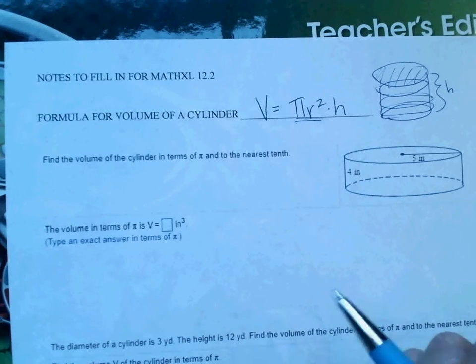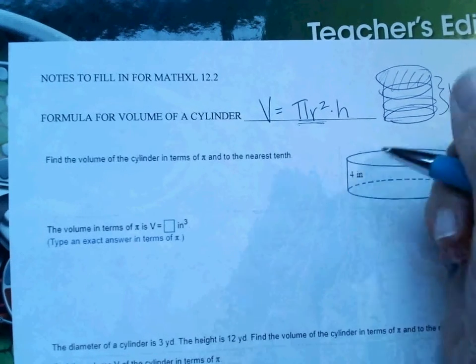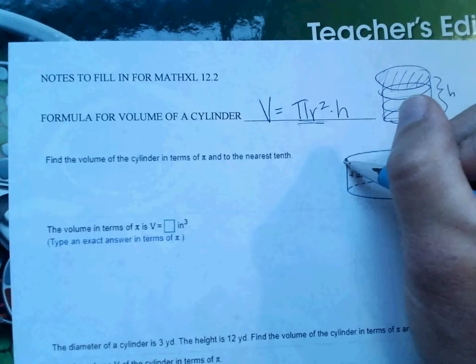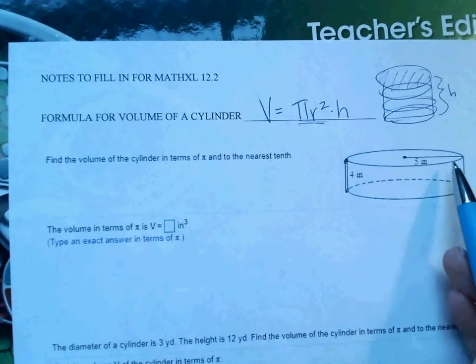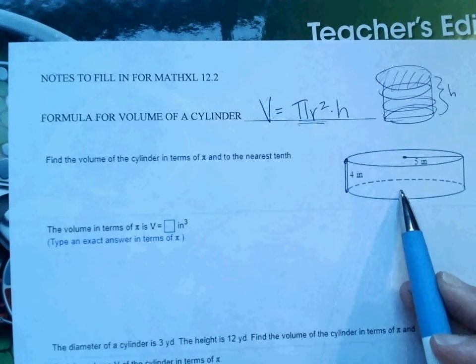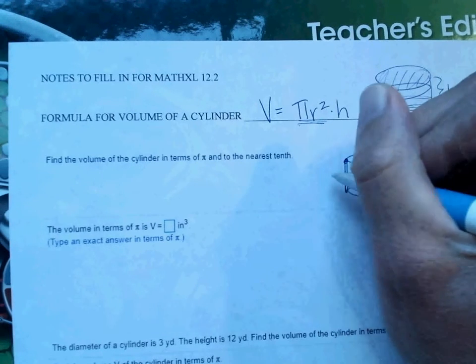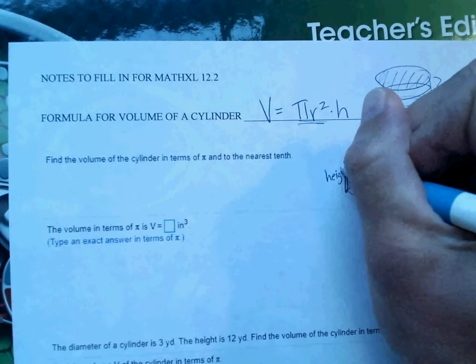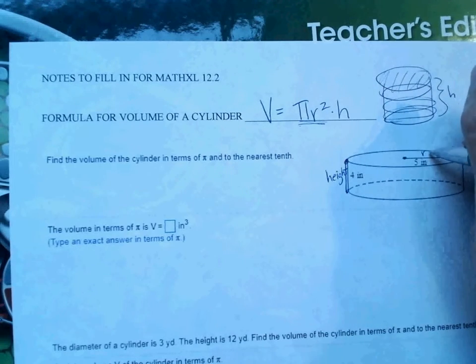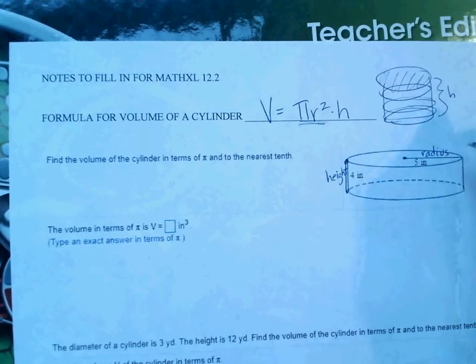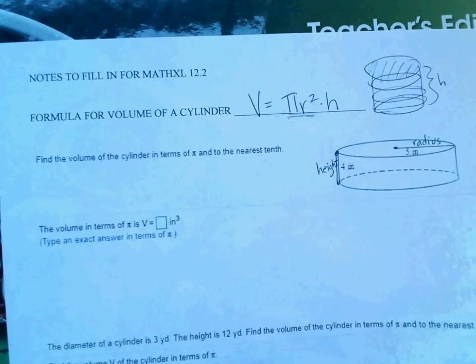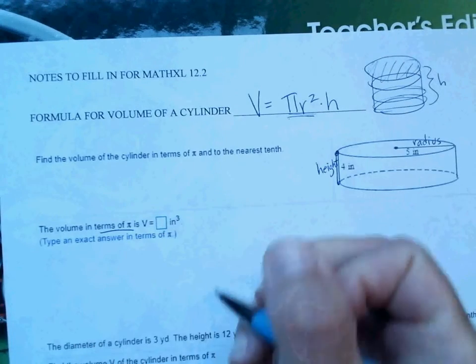In this case, they give us the height, and the height is the distance from circle to circle. So from base to base is how they think of it. So that means this 4 is the height. This would be our radius. So we're just going to fill in our formula, and notice it says in terms of pi. So we have to keep it exact.